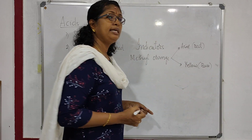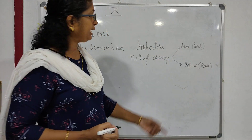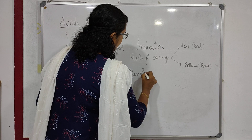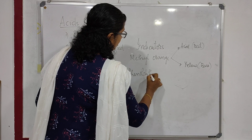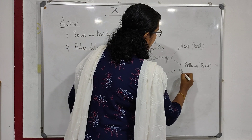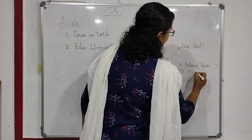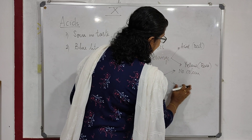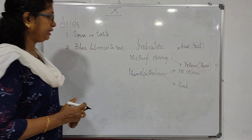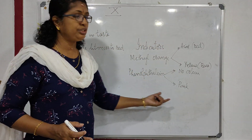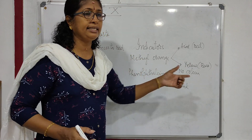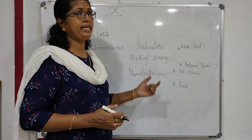So methyl orange: in acid it is red in color and in base it is yellow in color. Then phenolphthalein — in acid it is having no color, it is colorless. Then in base it will be having pink color. So in acid it shows no color change and in base it will be pink. Using a color change, they are indicating the presence of acids and bases, so they are called indicators.